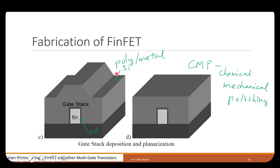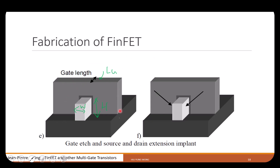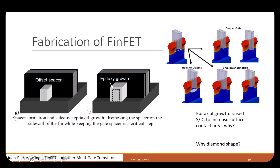After polishing, with photolithography and etching, you have the gate surrounding the fin. Then we do implantation — for example N-plus. Because the gate is blocking the middle, you get N-plus in the front and N-plus at the back. One side becomes source and the other becomes drain.